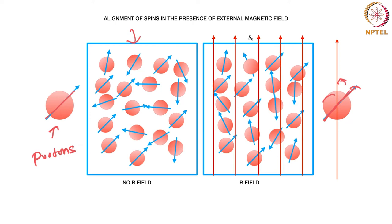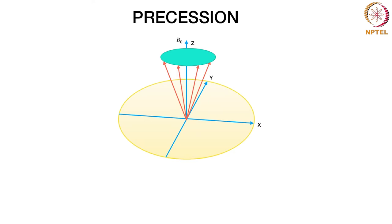That is the general setup for an MR experiment. Your sample — a human patient or any other biological sample — is placed in a static magnetic field pointing along the Z-axis. Consequently, all the nuclear magnetic spins are aligned preferentially along the direction of the static magnetic field and there is a precession. This is the initial setup. Then — how do we make the measurement? Where does the measurement come from?